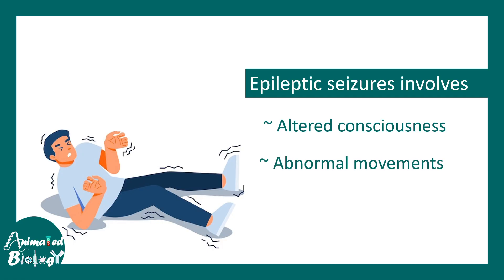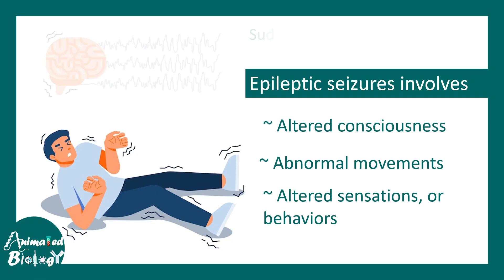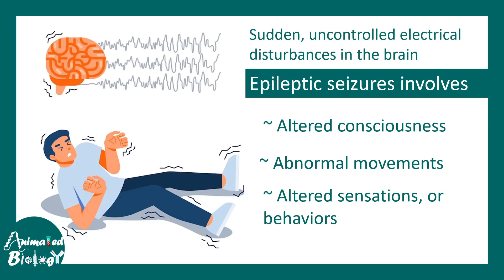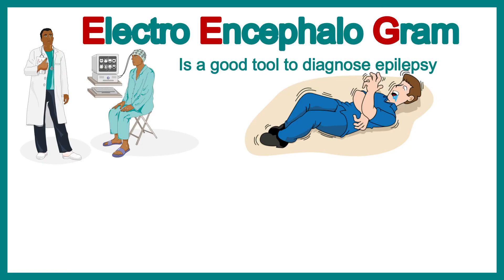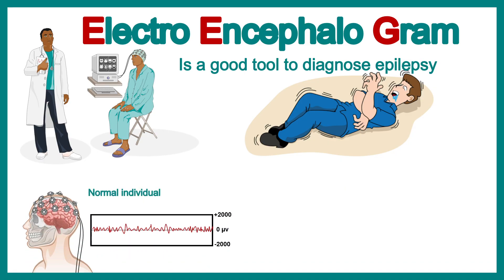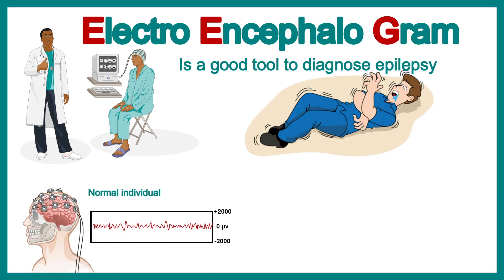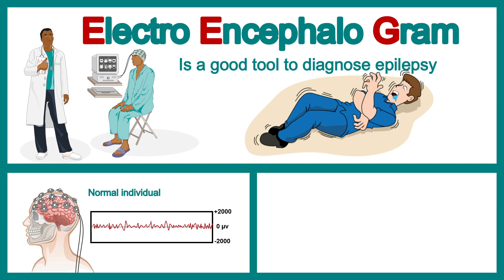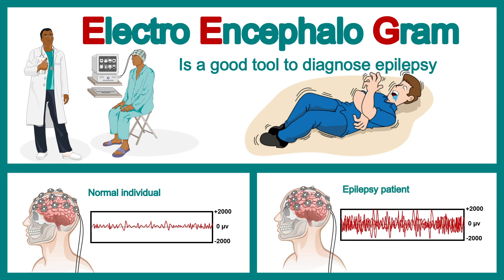Key features of epilepsy include altered consciousness, abnormal movements, altered sensations and behavior, all resulting from uncontrolled brain activity. All these features can be diagnosed using an electroencephalogram (EEG). A normal EEG recording looks distinct, but if the individual has epilepsy this would be clearly evident in the EEG traces.